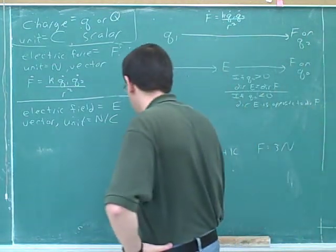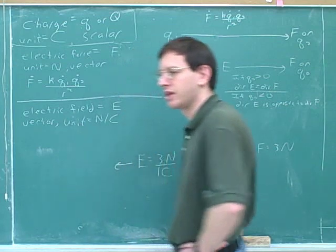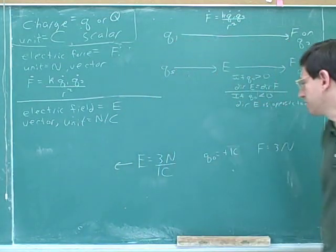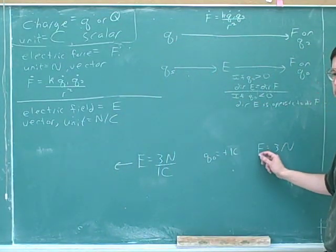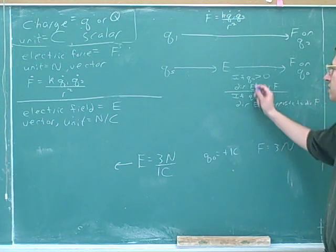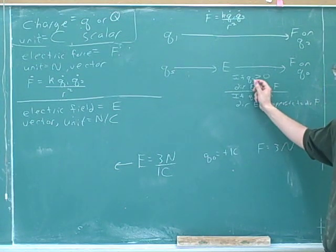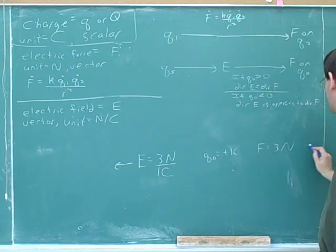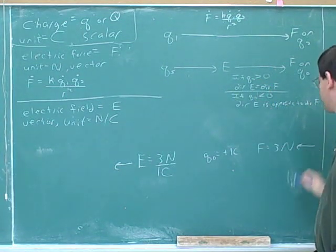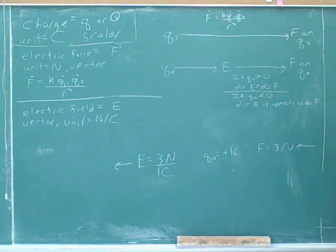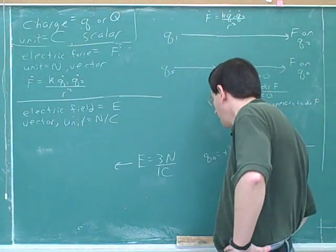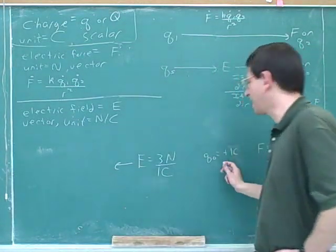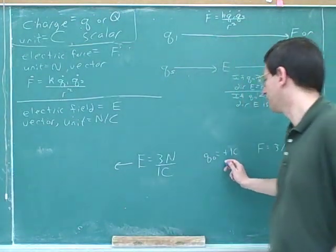Let's say the field is to the left. If the field is to the left and we have a positive test charge, what direction would the force be in? For a positive charge, the field and the force are in the same direction — so the force would also be to the left. How can we work this out mathematically?